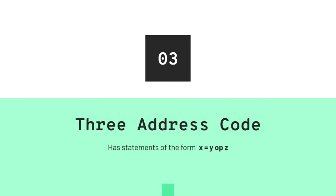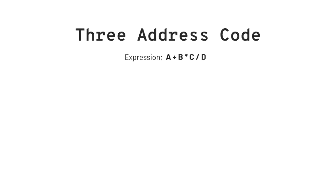Coming up next, we have three address code. A three address code is a statement of the form x = y op z, where op is an operator. It is called three address code because it involves no more than three references of an object and an operator. We have the expression a + b * c / d. The order of precedence of operators still stands.